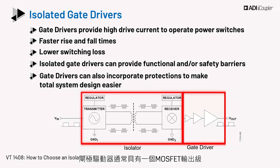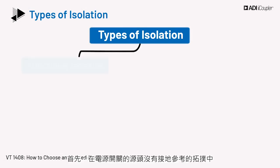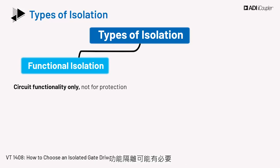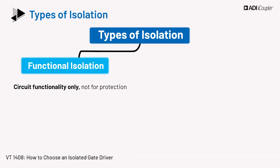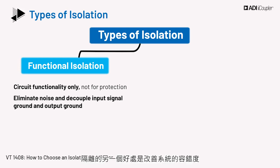The gate driver block would generally have an output MOSFET stage. There are two types of isolation that need to be considered. Firstly, functional isolation may be necessary in topologies where the source of the power switch is not ground referenced. This is the case in a buck converter and other topologies employing a half bridge. Separate grounds are necessary to completely isolate noise and remove ground loops. The other advantage with isolation is improvement in fault tolerance of the system.